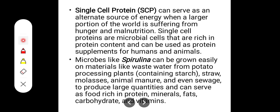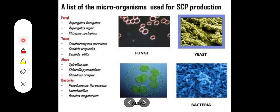Single cell protein (SCP) can serve as an alternate source of protein when a large portion of the world suffers from hunger and malnutrition. Single cell proteins are microbial cells rich in protein content and can be used as protein supplements for humans and animals suffering from protein deficiency. Microbes like Spirulina can be grown easily on wastewater from potato processing plants, straw, molasses, animal manure, and sewage to produce food rich in protein, minerals, fat, carbohydrates, and vitamins.